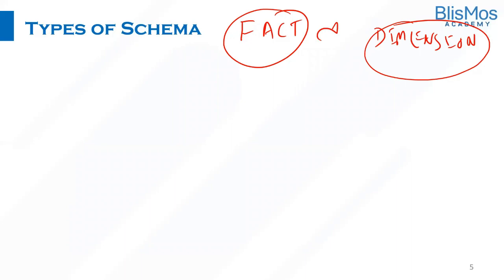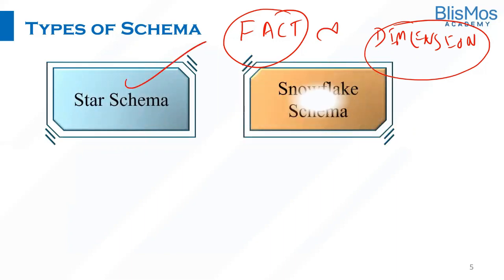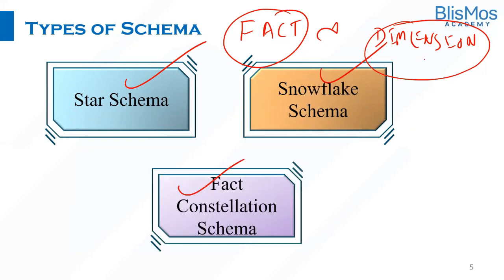The different types of schemas in a data warehouse are: first and foremost, star schema; second, snowflake schema; and third, fact constellation schema. We will understand all of them one by one in our subsequent videos.